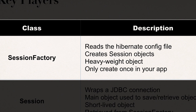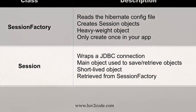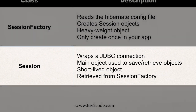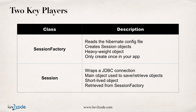Once you have the Session Factory created, it will create sessions — the whole idea of a Factory is creating objects. So that's our next player: Session. The Session is really just a wrapper around a JDBC connection to the database. It's the main object you're going to use for saving and retrieving objects. The Session is a short-lived object — for a given method, you get a Session, use it, and throw it away, then get another one. The Session is retrieved from the Session Factory. I'll show you some coding on how these two work together, but I wanted to give you a definition up front.